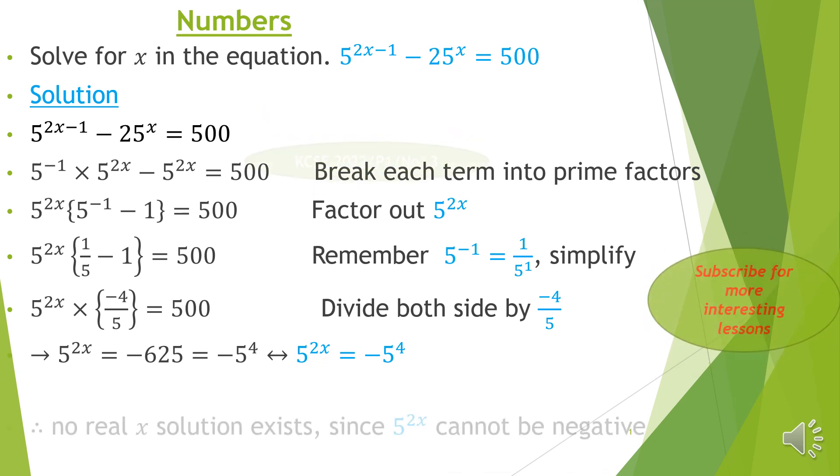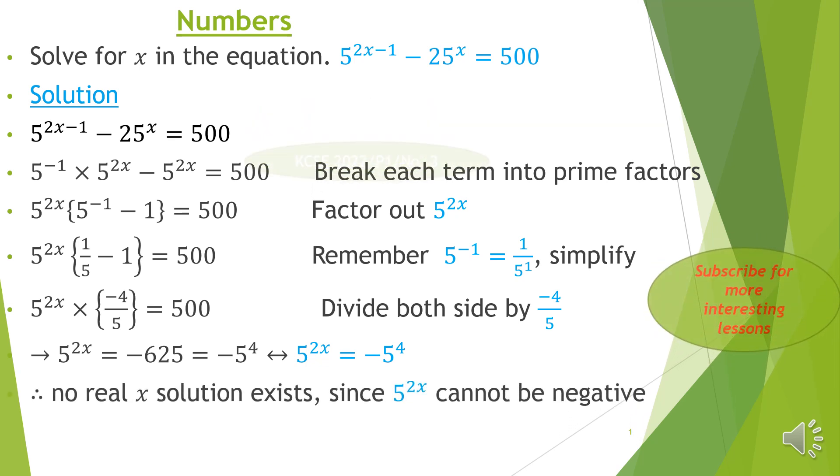From there, we realize that no real x solution exists, no real x solution exists, since 5 raised to 2x cannot be negative altogether. And therefore, we say that it has no real x solution. The reason behind is that 5 raised to 2x cannot be negative.